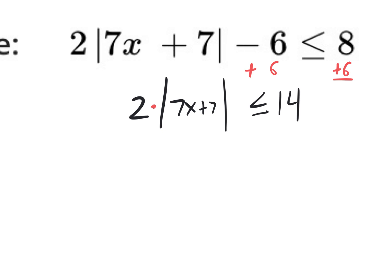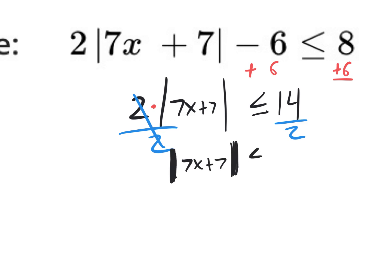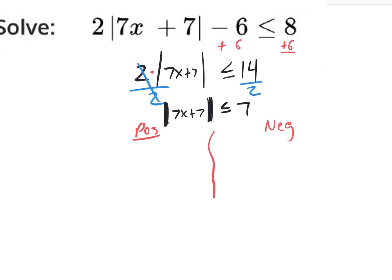We still have the multiplication of 2. Don't multiply it in — divide by 2 to isolate the absolute value. That gives us |7x + 7| ≤ 7. You don't flip the inequality because we didn't divide by a negative. Now that it's isolated, jump to positive and negative situations. Positive: 7x + 7 ≤ 7. Negative: 7x + 7 ≥ negative 7, flipping the inequality and changing the sign of the right side.